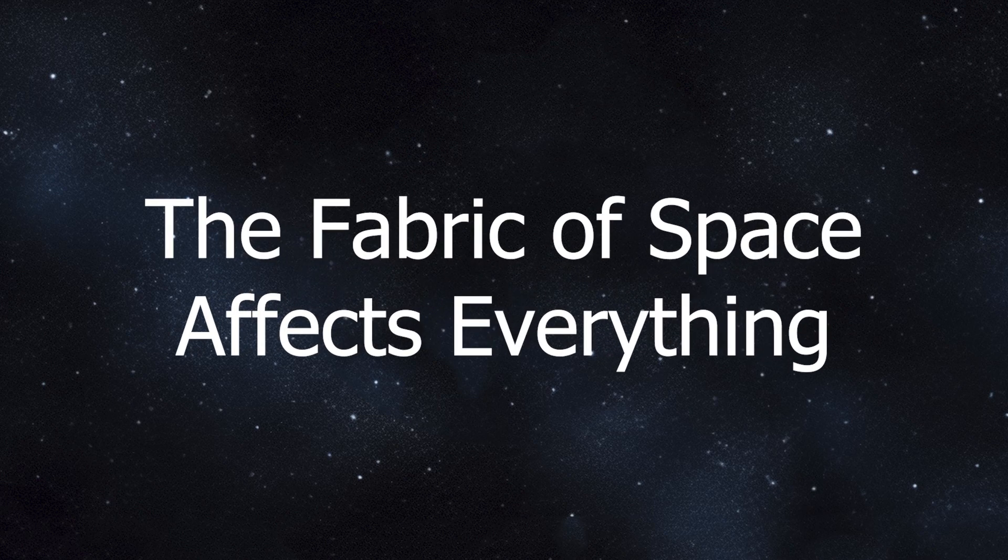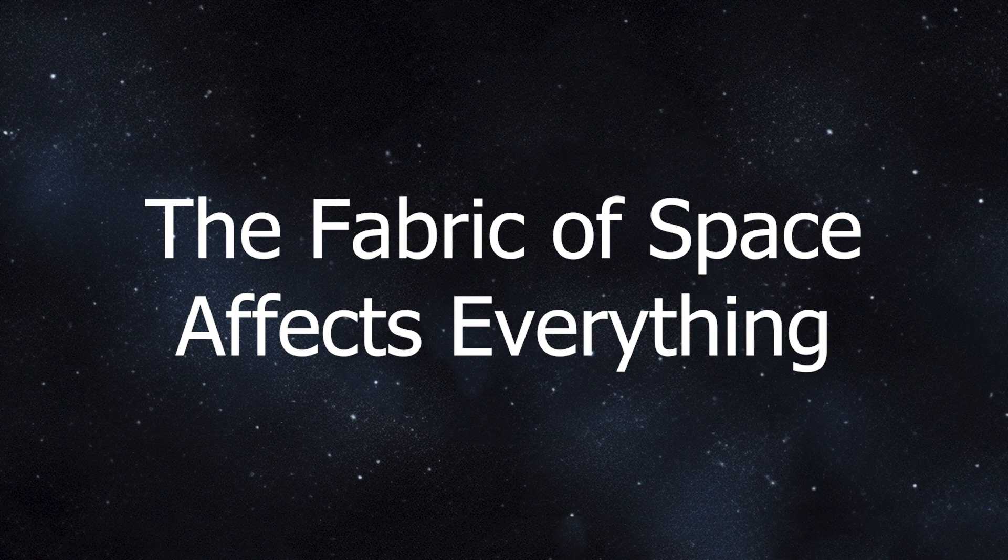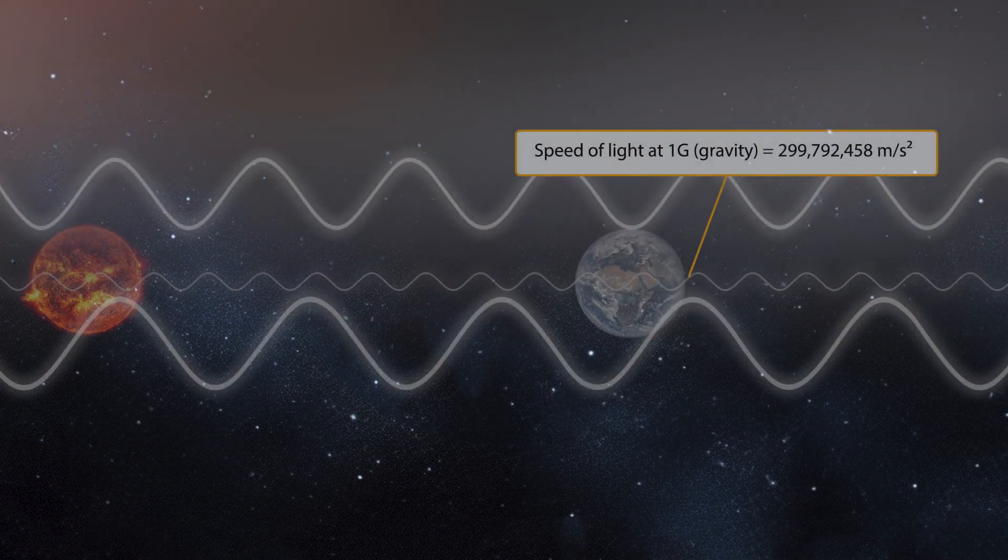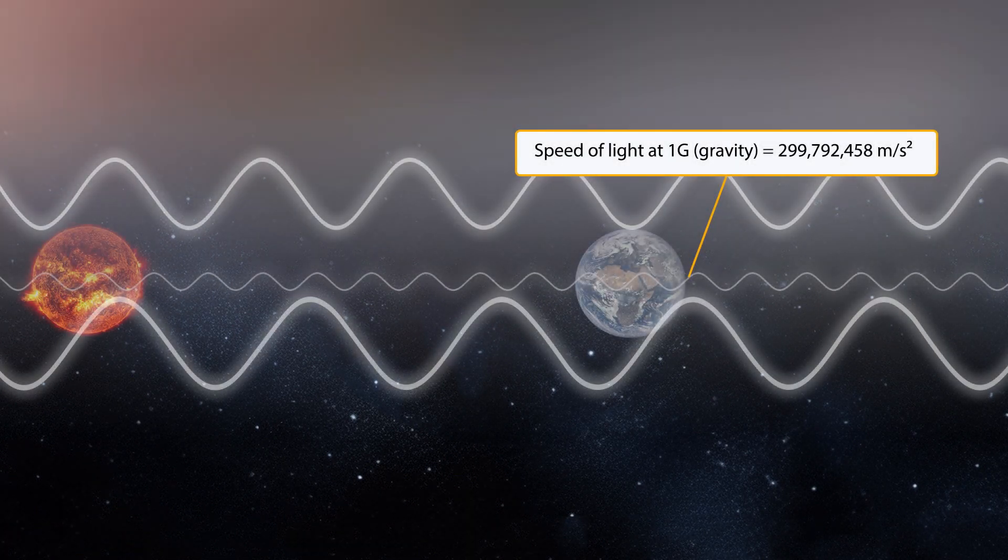Einstein brought together the ideas of space and time with general relativity and the warping of space-time in the early 1900s. The thought that light traveled through a medium or luminiferous ether began much earlier in the late 1800s.